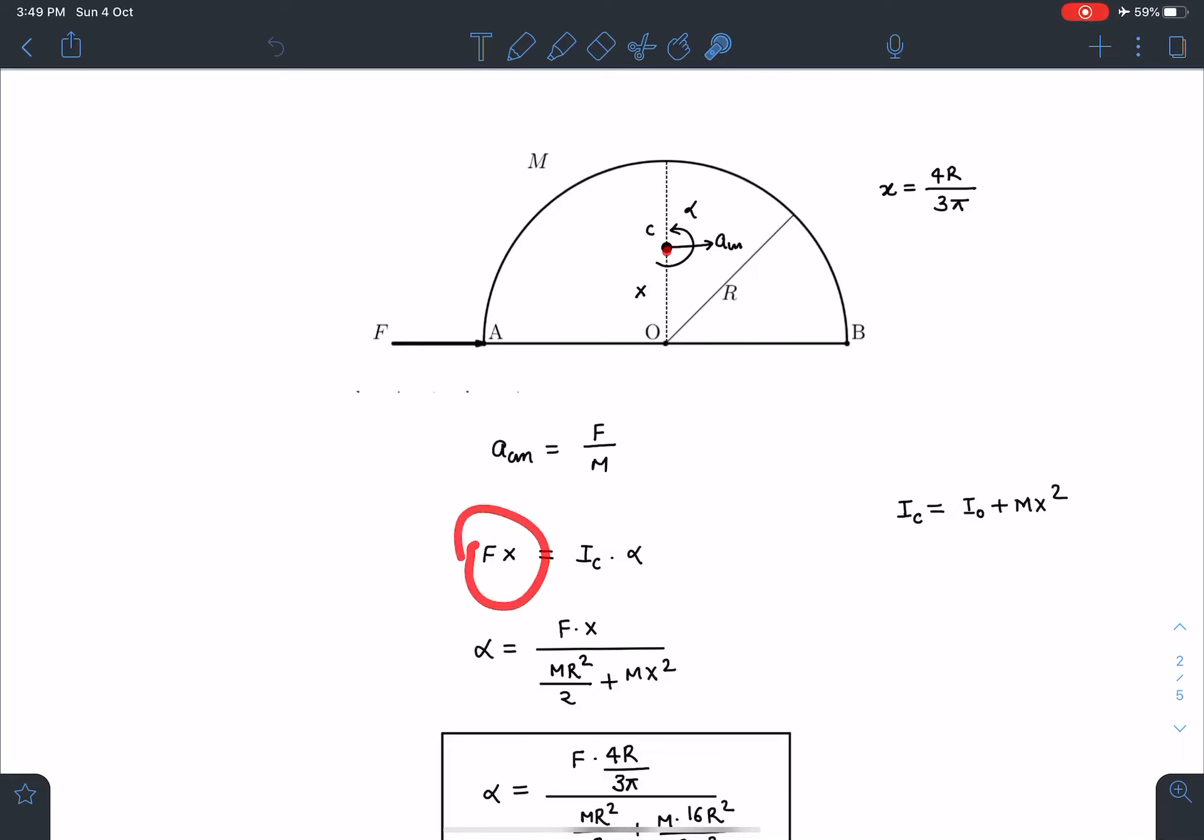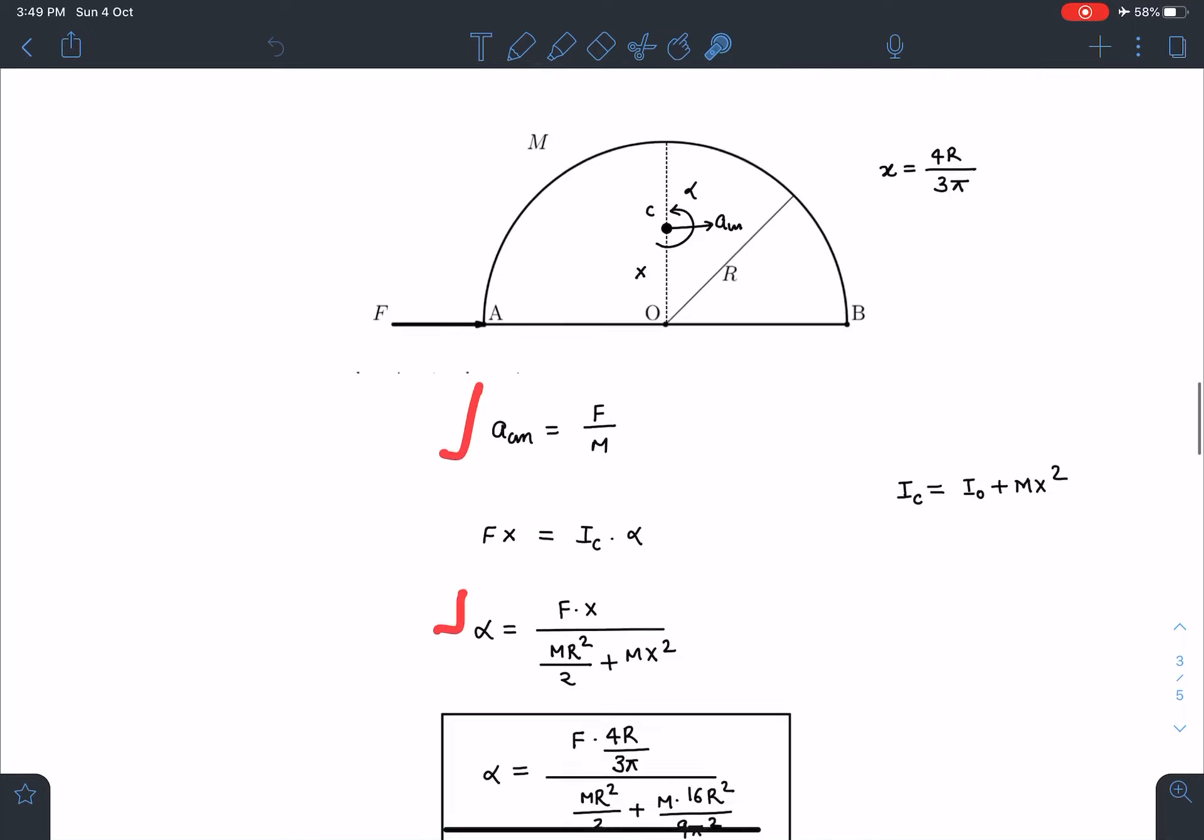If I take torque, F times x, and that is equal to Ic times alpha, where Ic value I can say is going to be I0 plus mx squared, where I0 is mR squared by 2 and this x is 4R by 3π. So alpha value is also known to us. Acm is also known to us. I am not simplifying this part, I hope you can understand this.